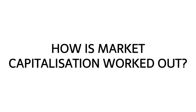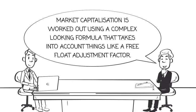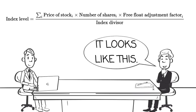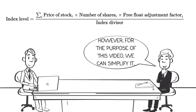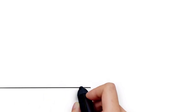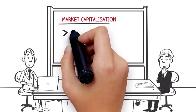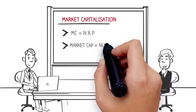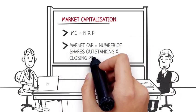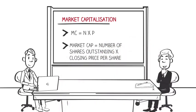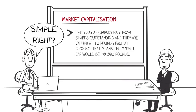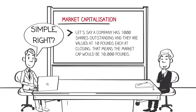How is market capitalization worked out? Market capitalization is worked out using a complex formula that takes into account things like a free float adjustment factor. However, for the purpose of this video, we can simplify it. The sum would be MC equals N times P, which is market cap equals number of shares outstanding times closing price per share. For example, if a company has 1000 shares outstanding and they are valued at £10 each at closing, the market cap would be £10,000.